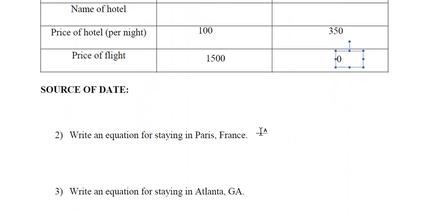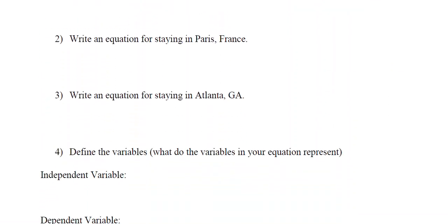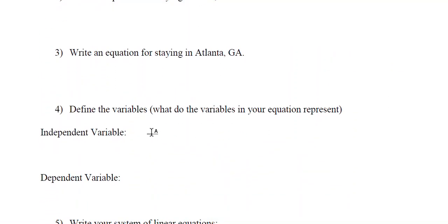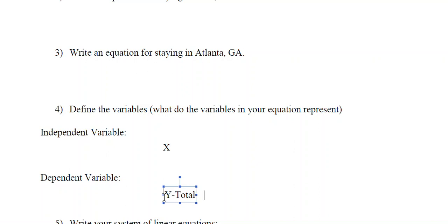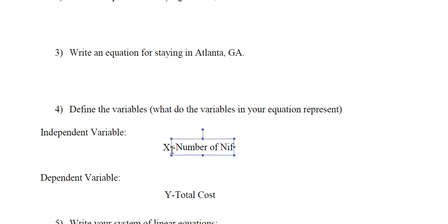Now let's write an equation. Let's think about what x and y would represent — our independent and dependent variables. Our independent variable is x, and our dependent variable is y. Our total cost is dependent on the number of nights in the hotel.